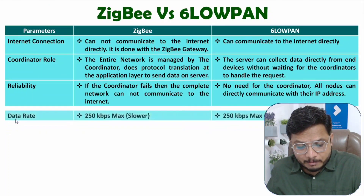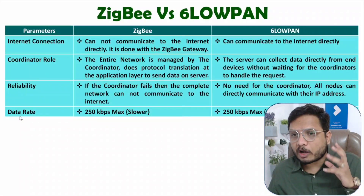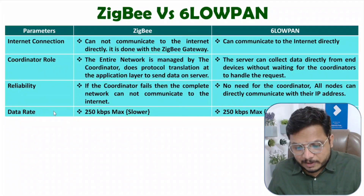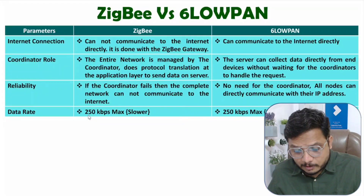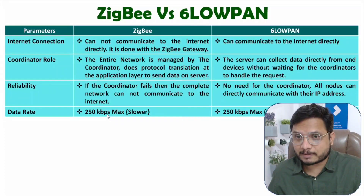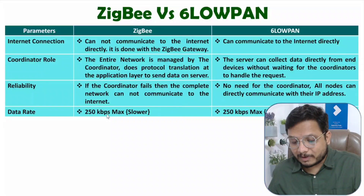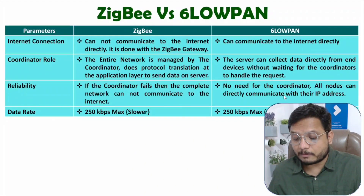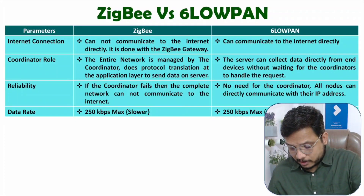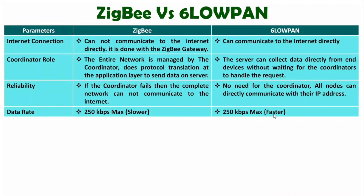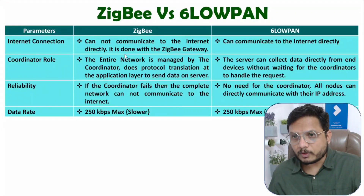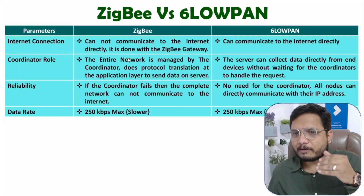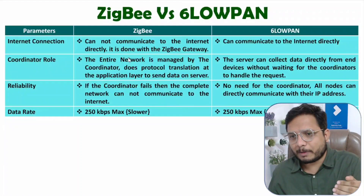The next parameter is data rate. The highest data rate with both ZigBee and 6LoWPAN is 250 kbps at maximum. But still, ZigBee is slower compared to 6LoWPAN. 6LoWPAN is the faster one, and there are other reasons for this that will become clear from additional parameters.